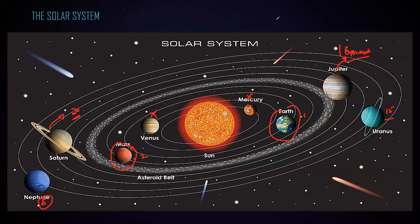Moons are the objects which orbit the planets. The moon is a natural satellite. There are also artificial satellites — those are the ones we send into space, which move around the Earth. We use them for observation and space probes. The natural satellite is the moon, which moves completely around the Earth.